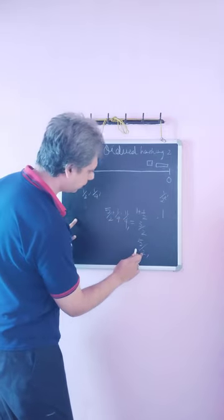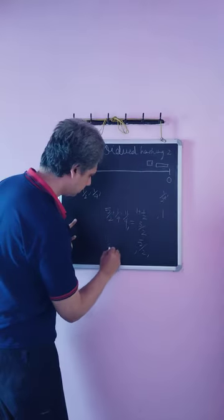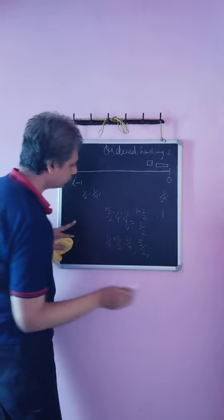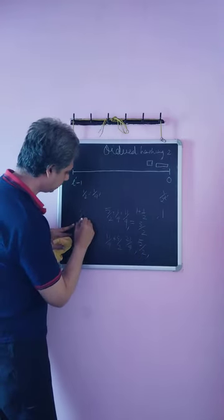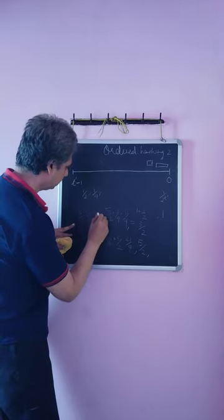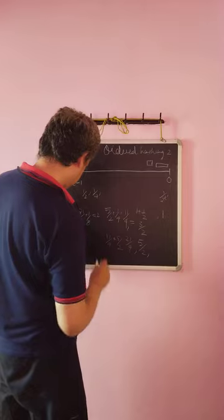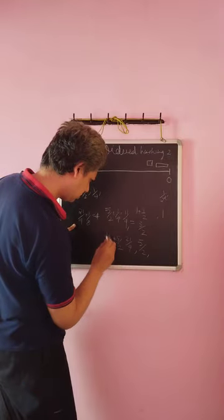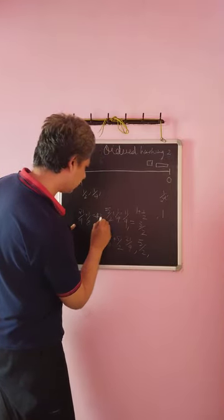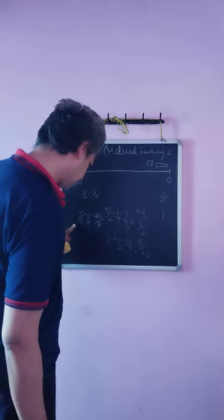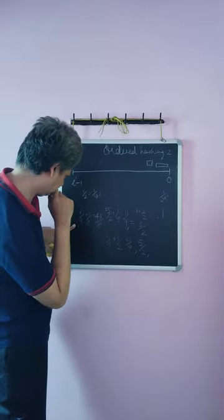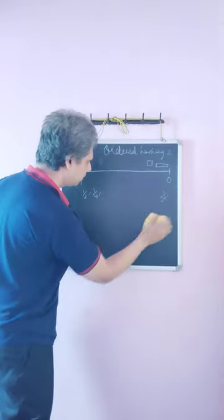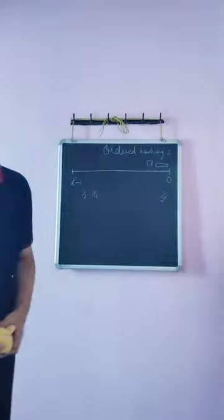So, now, 11 by 4 plus 5 by 2 should give you 21 by 4. So, the next weight will be 21 by 4 plus 1 by 8 is equal to 43 by 8 and so on. So, the series of weights for a few terms will turn out to be something like this.